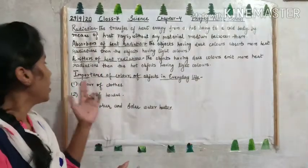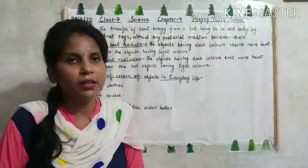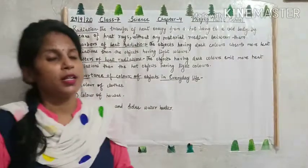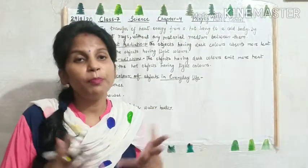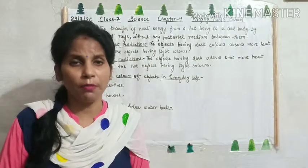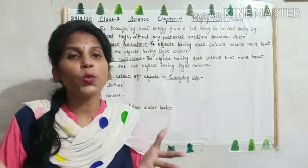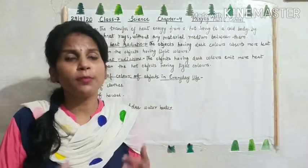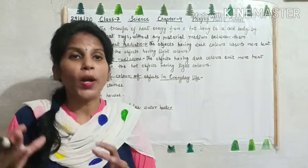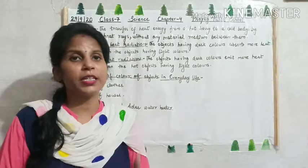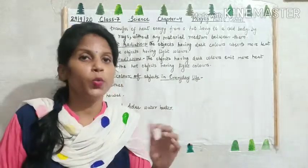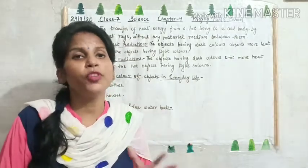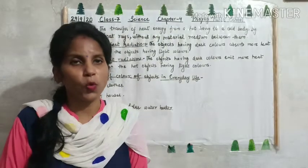Now, the importance of color of objects in our daily life. First, color of clothes: we prefer to wear light colored clothes in summer and dark colored clothes in winter. Light colored clothes absorb less heat and keep us cool, while dark colored clothes absorb more heat and keep us warm. So in summer we like to wear light colored clothes, and in winter we prefer dark colored clothes.